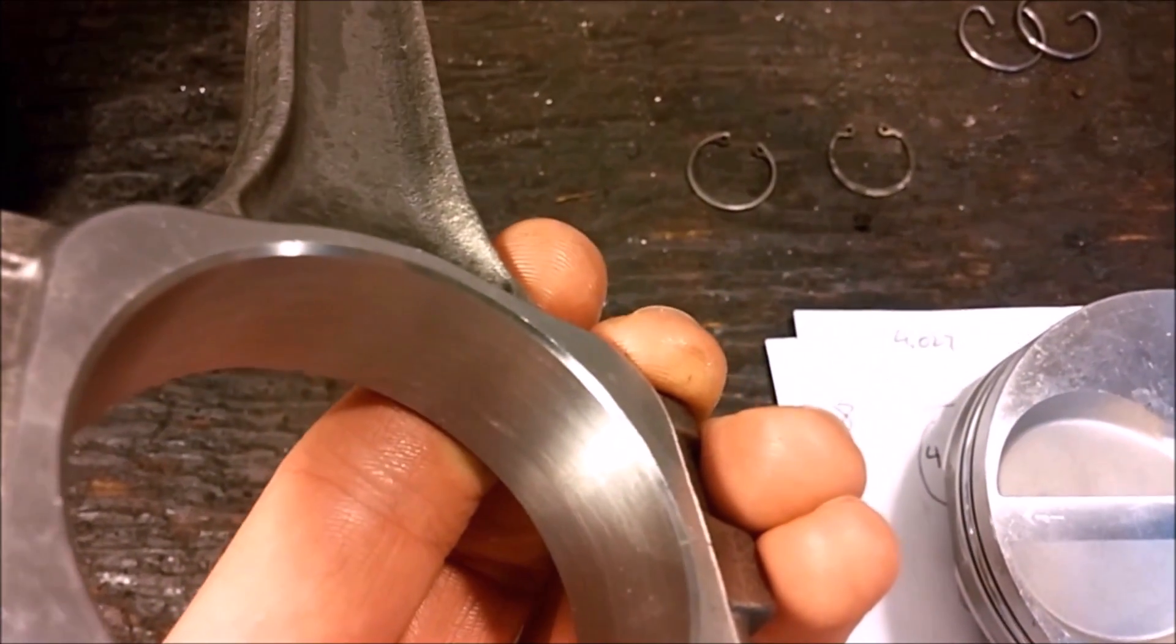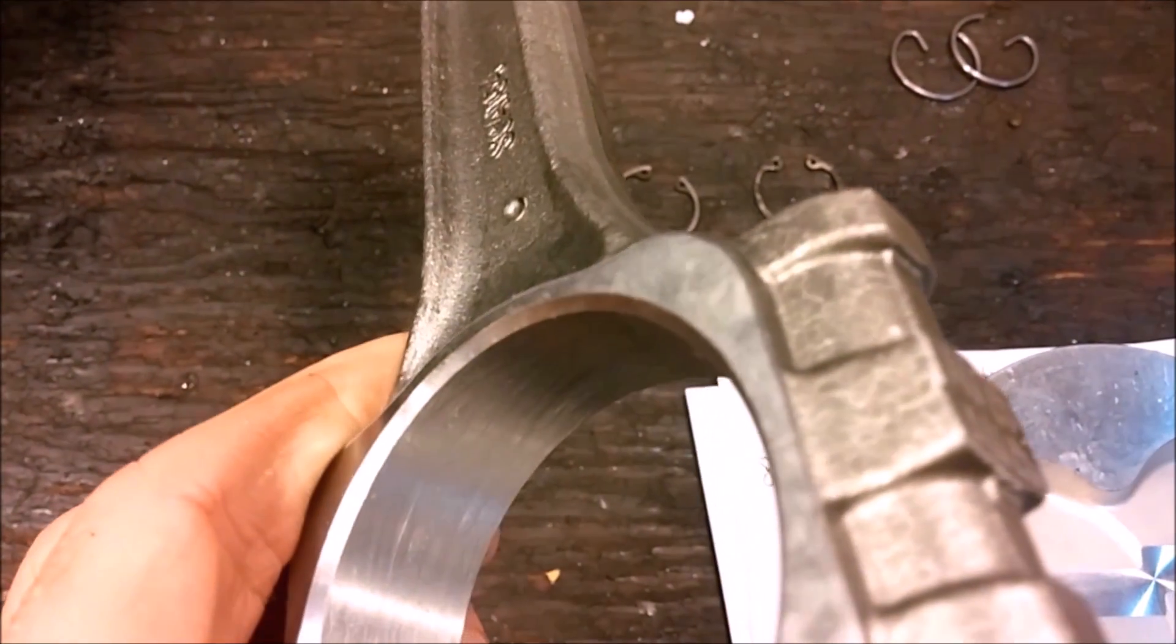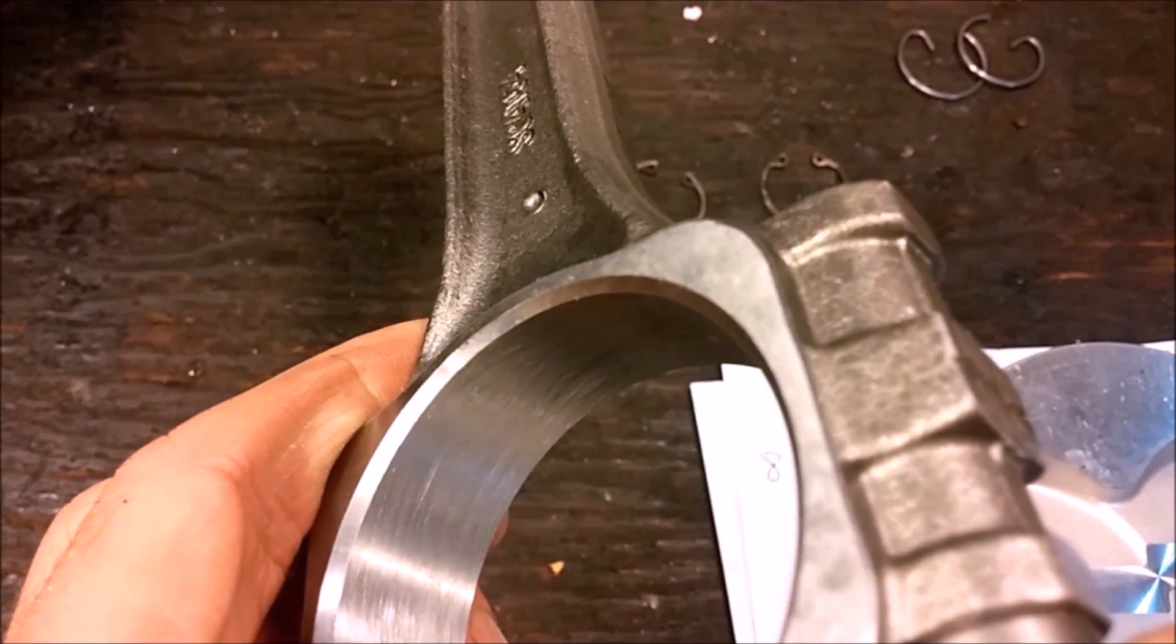So you'll notice if you look closely that there's a small chamfer on this side of the rod and there's a large chamfer on this side. The large chamfer has to go against the counterweight.